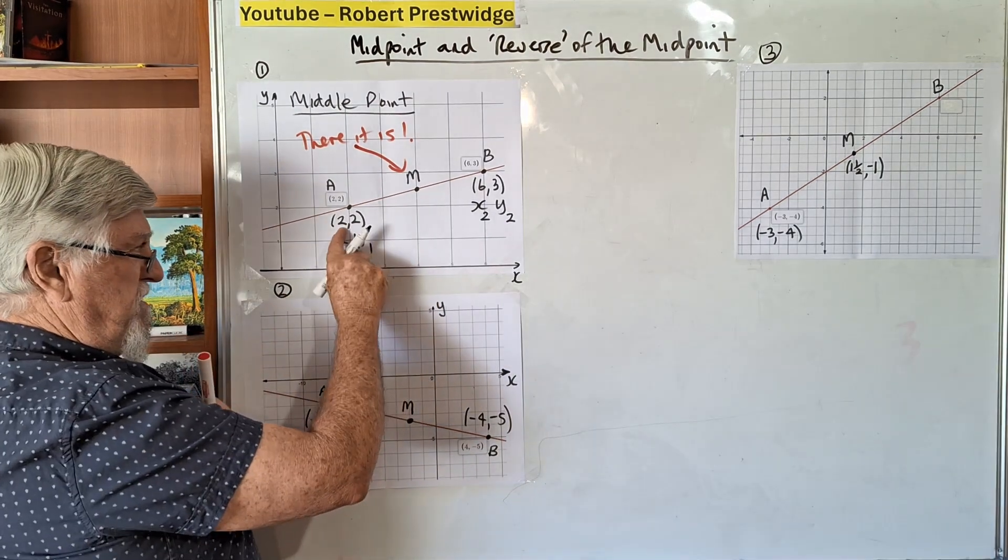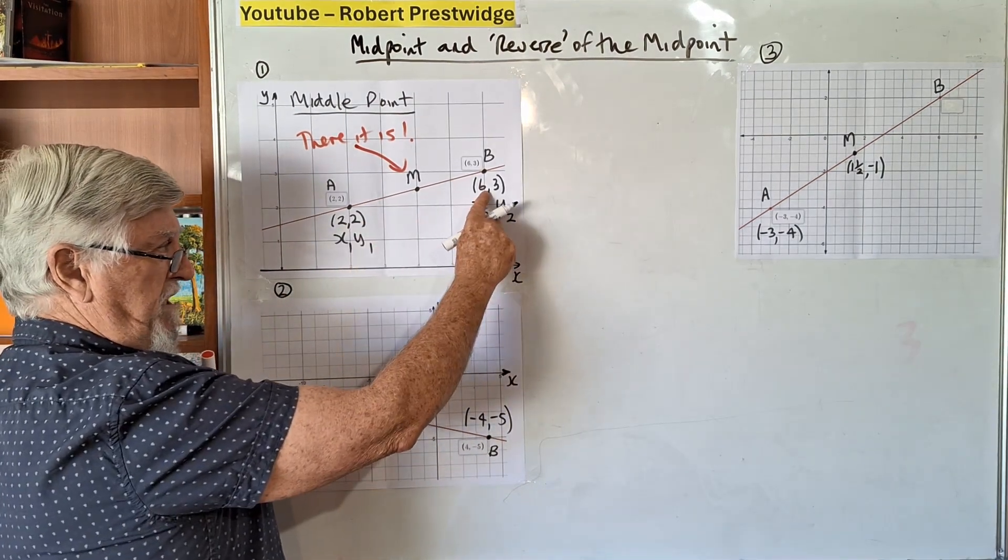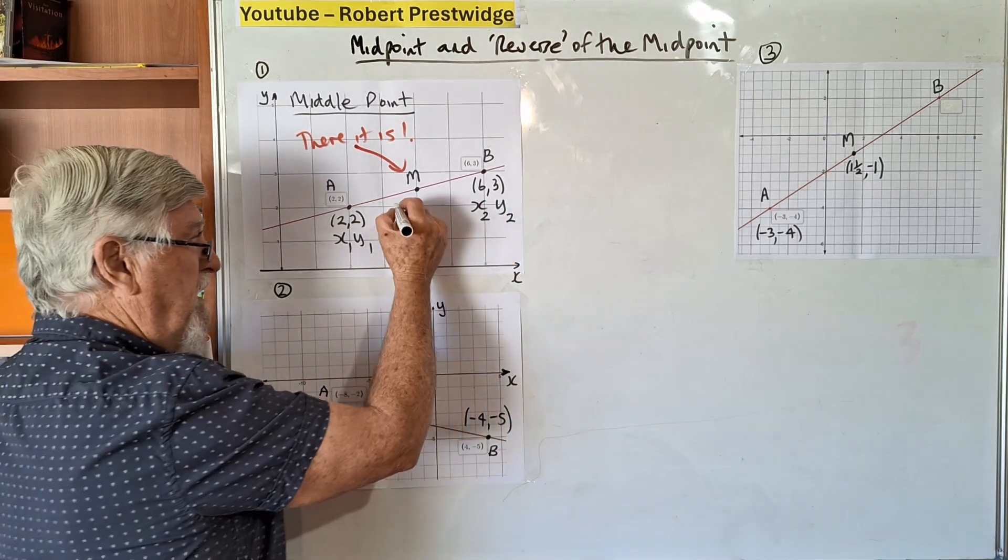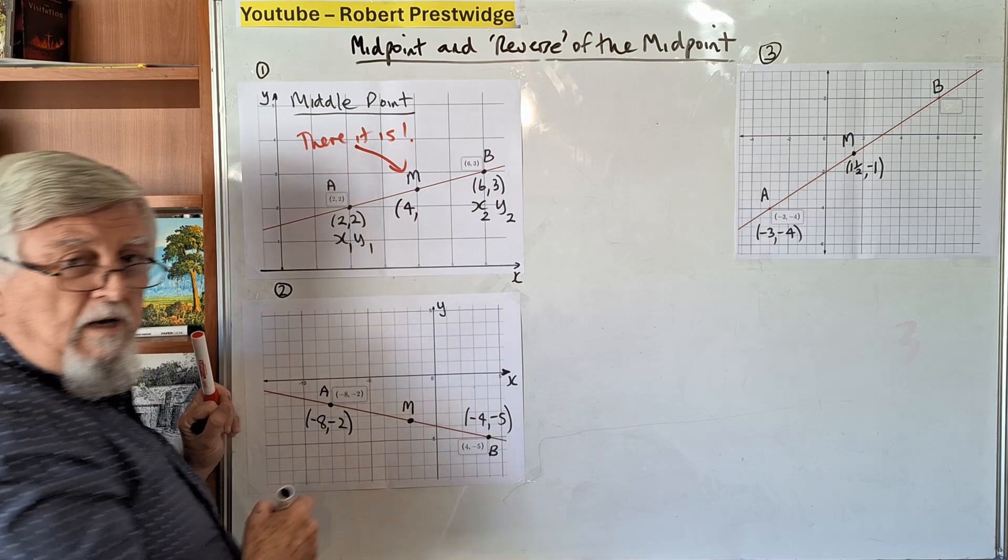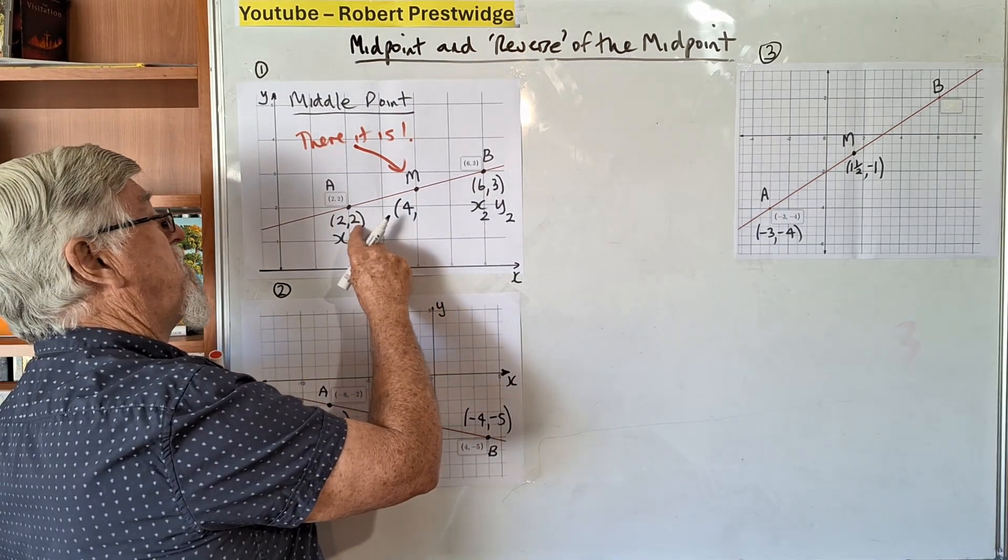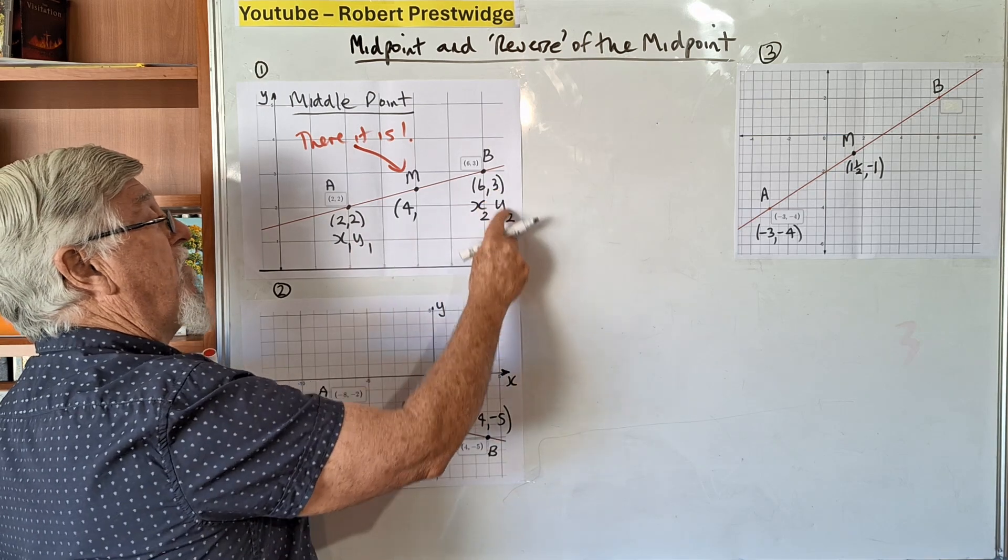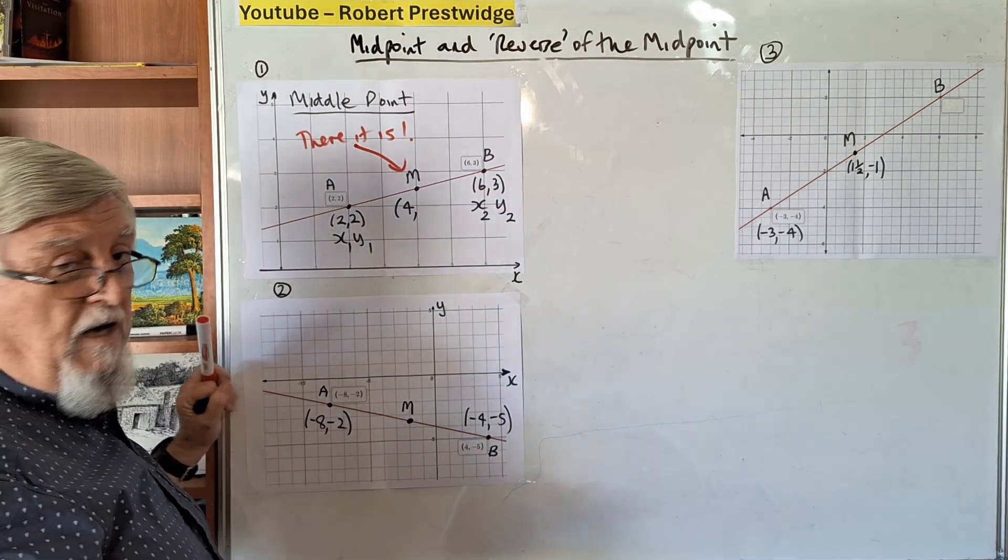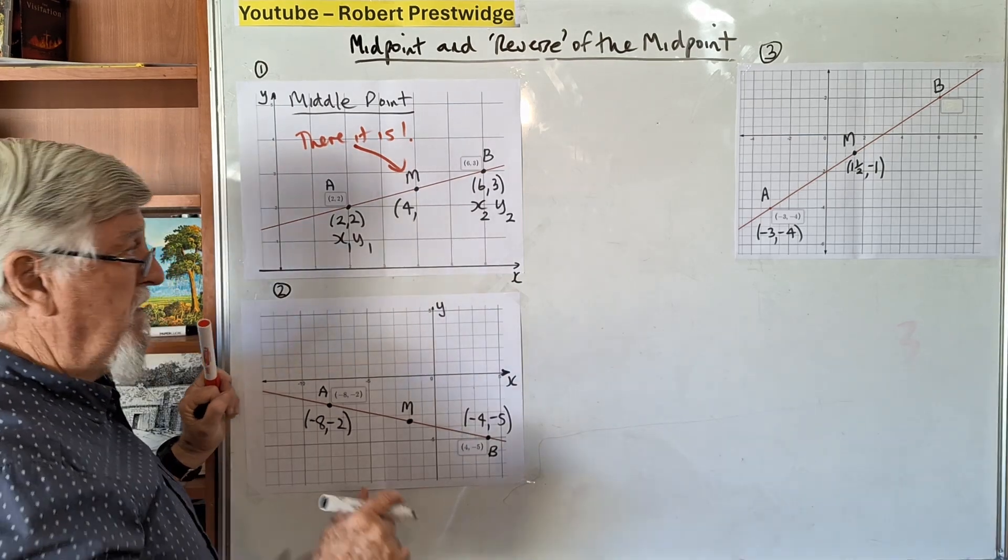Looking at the x values, this one is 2 and that one is 6. Many people can just look and say halfway between 2 and 6 is 4.